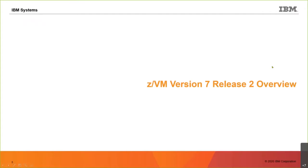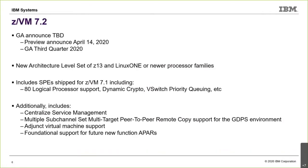Let's start with the 7.2 release. We did a preview announcement back in April. A preview announcement is like saying 'I'm in a relationship' — I'm not setting a date yet, but we intend to produce a new release 7.2, listed for third quarter of this year — think of it as September. There will be a GA announcement with more detail. There is a new architecture level set: z13 or any of the LinuxONE machines or newer — z14, z15, and so forth.